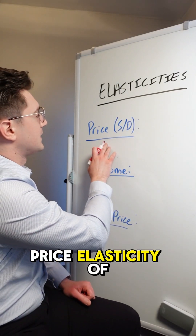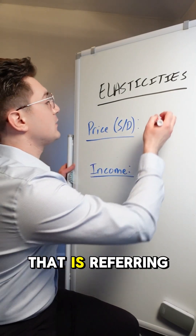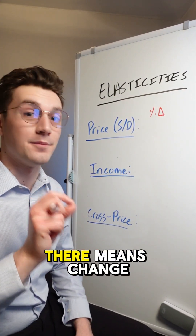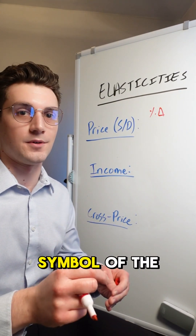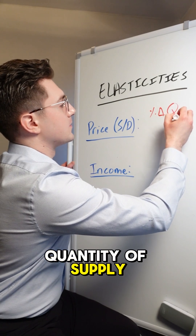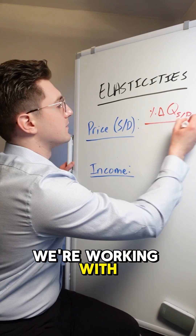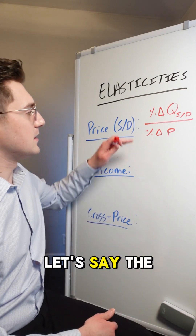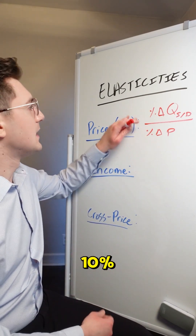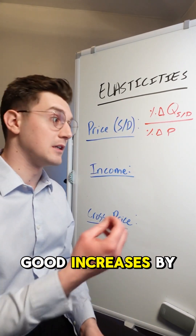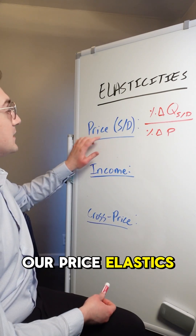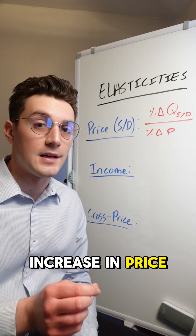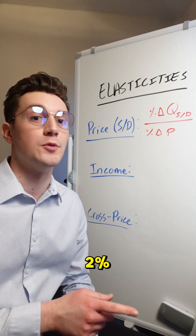Whenever you see price elasticity of supply or demand, that is referring to the percent change — and keep in mind that triangle symbol means change — of the quantity of supply or demand, divided by the percent change in price. For example, if the price of a good increases by 10% and the quantity supplied increases by 20%, our price elasticity of supply value would be positive two. In other words, with every percent increase in price, our quantity supplied is increasing by 2%.